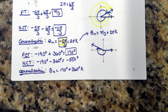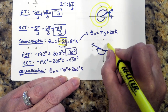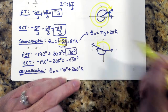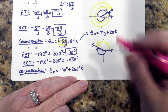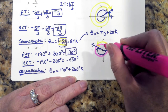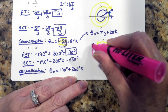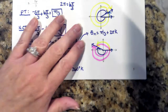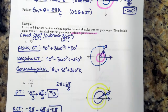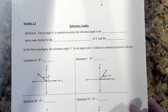In my sketch, the positive coterminal angle of 170 degrees is shown in the counterclockwise direction. For negative 550, I make one complete revolution around and then go another negative 190 degrees — that's the negative coterminal angle. A coterminal angle is an angle that has the same initial and terminal side but has a different angle measurement to describe the same angle.